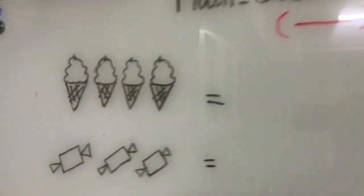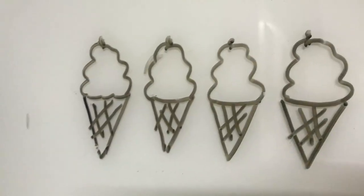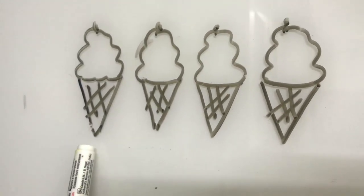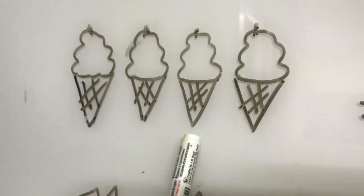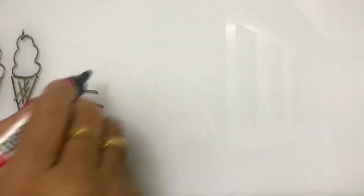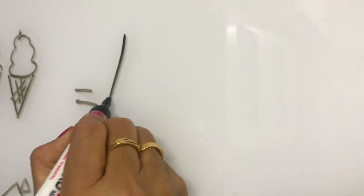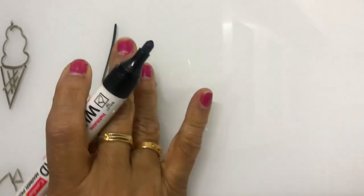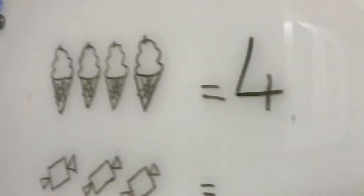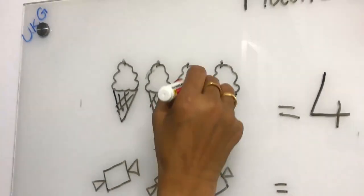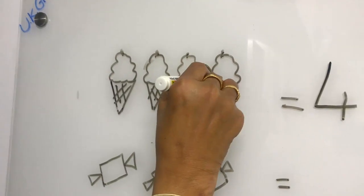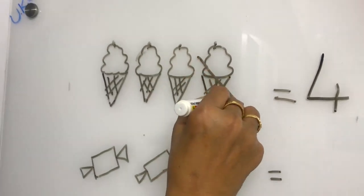Okay children, shall we count how many ice creams are there? Come on, let's count — one, two, three, four. How many ice creams are there? Four ice creams are there. Now, out of these four, I have given one ice cream to Rama.